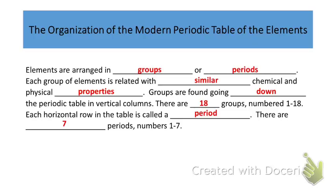So groups are found going down the periodic table in vertical columns. There are 18 groups numbered 1 through 18 on the periodic table. And the horizontal rows, row, row, that goes across the periodic table, left to right, is called a period. There are seven periods numbered 1 through 7 on the periodic table. You might even look at your own periodic tables and get them out and you can see those occurring there.